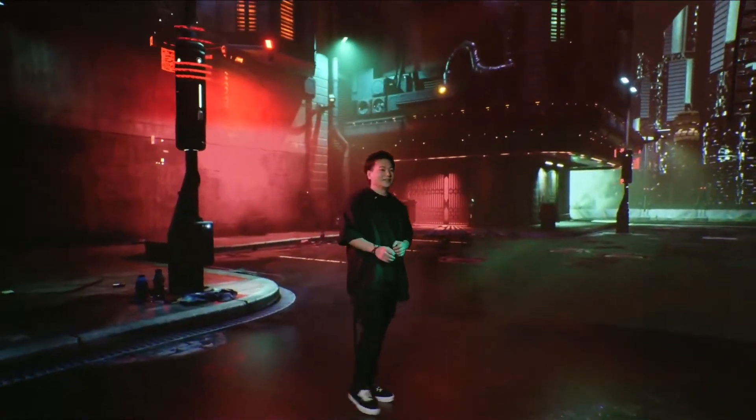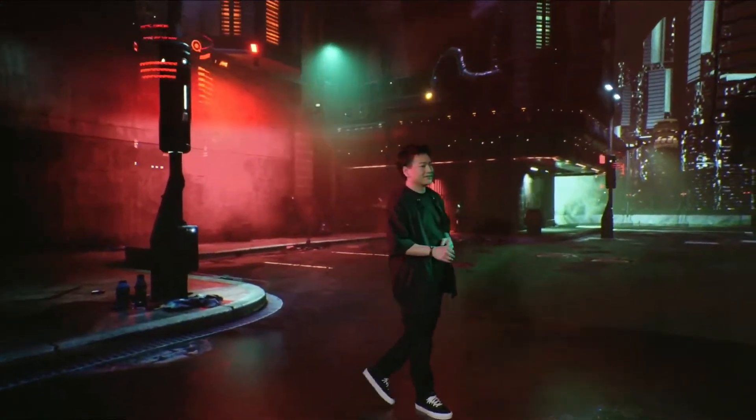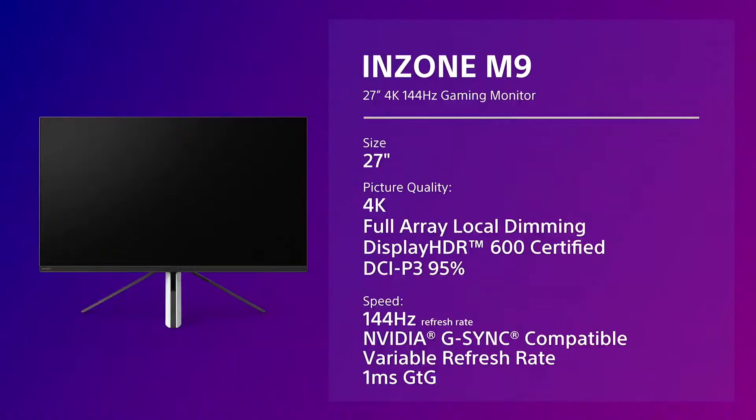Let's get into more detail about the M9 monitor. This model can output 4K signals at up to 144Hz and provides immersive experiences for gamers who seek great picture quality by supporting DisplayHDR600 specifications.